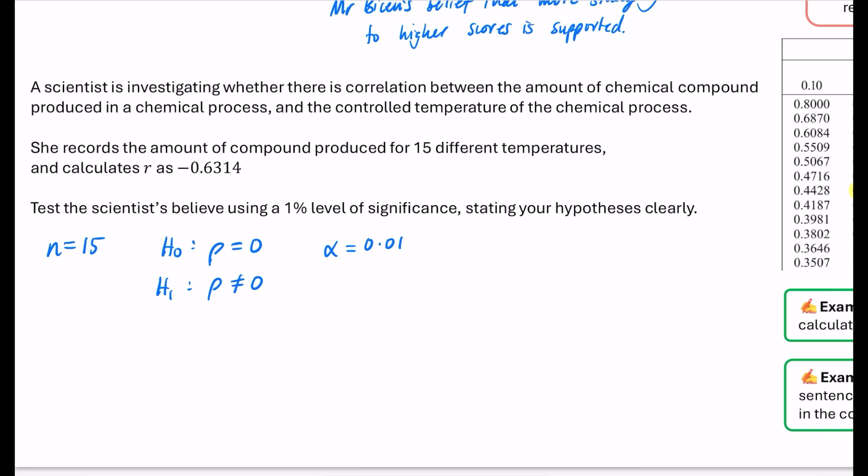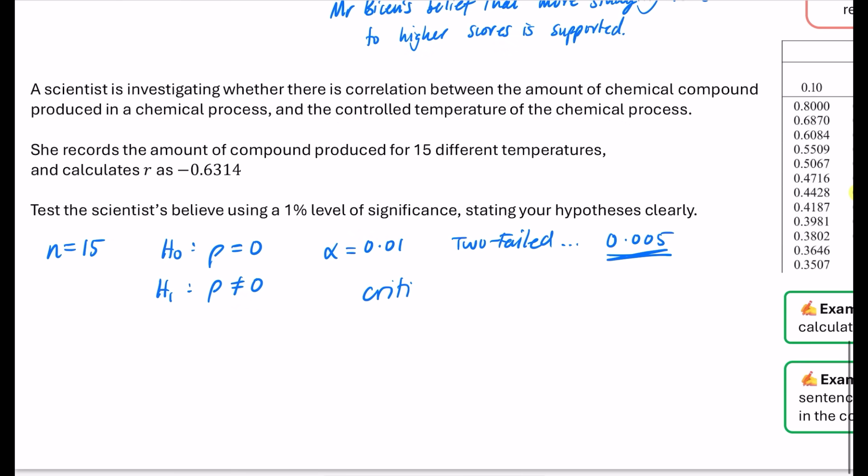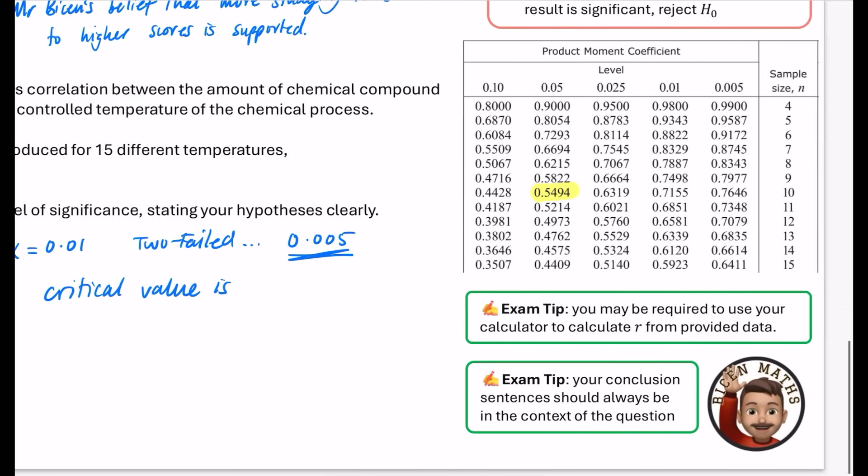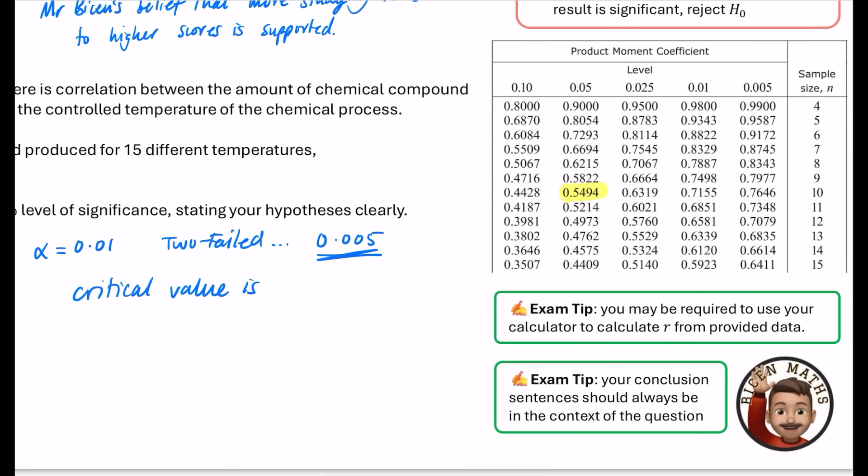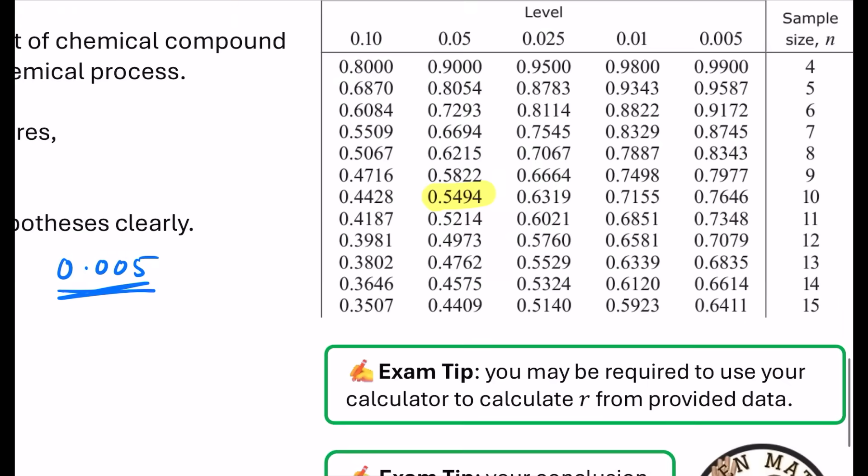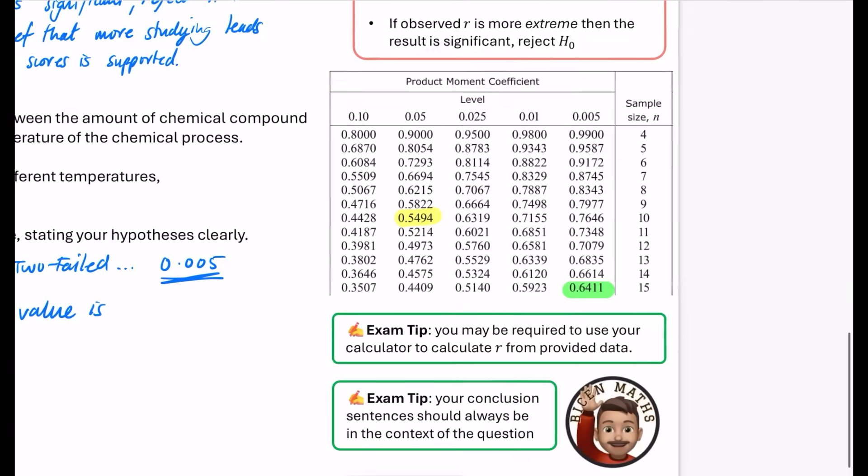So, we were using 0.01. But because it is two-tailed, we will half it. So, we get 0.005. We're going to be looking up n equals 15 and 0.005. So, the critical value is 15 and 0.005. It is 0.6411.